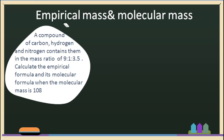So, this is the problem. A compound of carbon, hydrogen, and nitrogen. The mass ratio — in a molecule, comparing the mass ratio of carbon, hydrogen, and nitrogen — is 9 is to 1 is to 3.5. We have to calculate the empirical formula and the molecular formula.